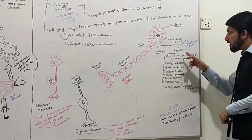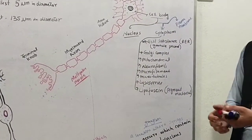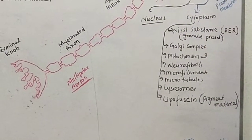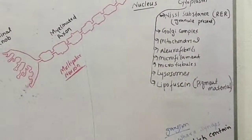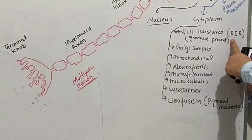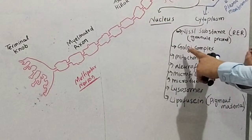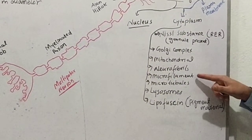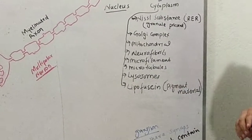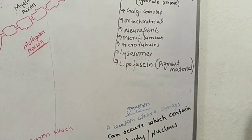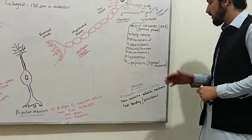The cell body contains a nucleus and cytoplasm. The cytoplasm has a plasma membrane. The cytoplasm contains cell organelles, including Nissl substance, which forms granules that make proteins. On the surface of the endoplasmic reticulum, there is also rough endoplasmic reticulum. The cytoplasm also contains Golgi complex and mitochondria.